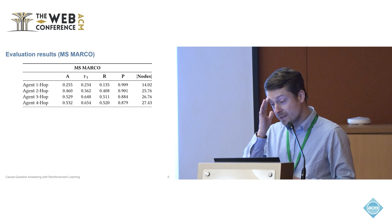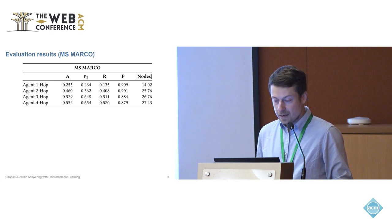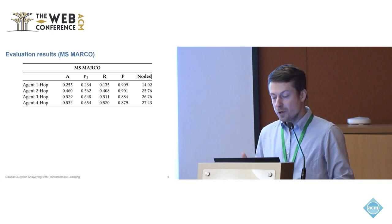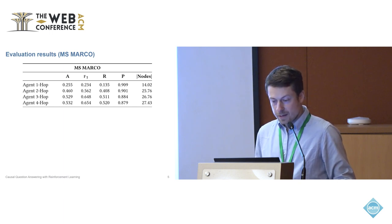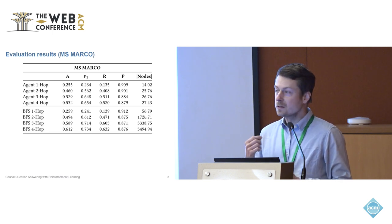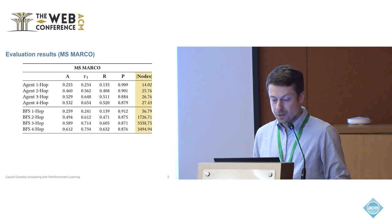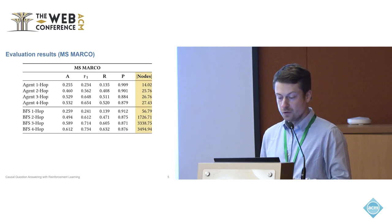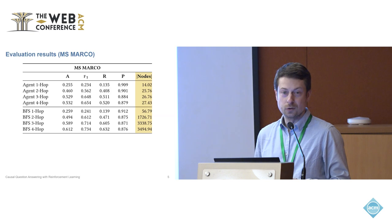First, we look at different versions of our agent where we vary the hyperparameter T — the maximum number of hops. What you can see is that after 3 or 4 hops, the F1 measure does not improve anymore. Comparing our approach against breadth-first search, the most important result is that we can dramatically prune the search space. For example, the 3-hop variant of breadth-first search visits more than 3,000 nodes, whereas our 3-hop agent needs to visit fewer than 30 nodes — meaning we prune the search space by over 99%.